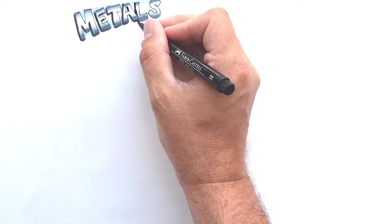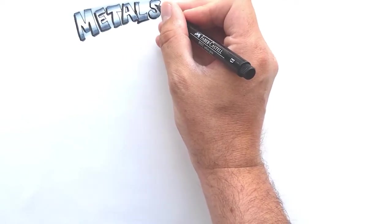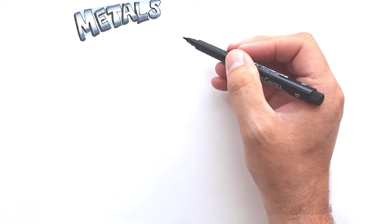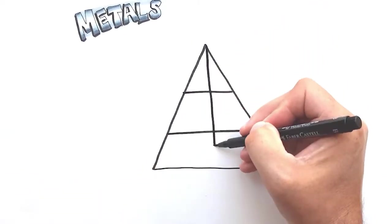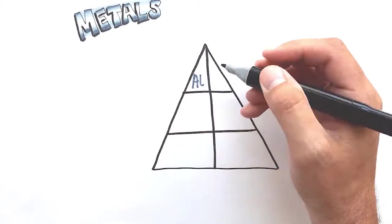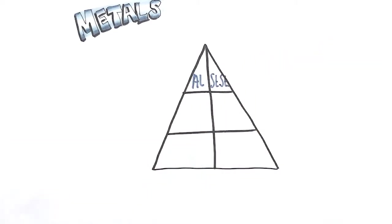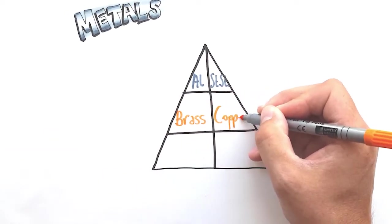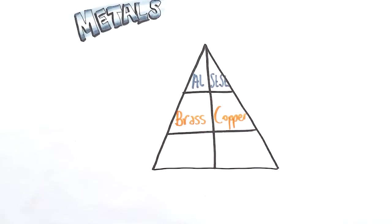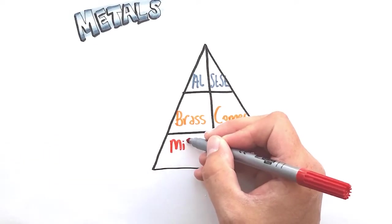Once again instead of just telling you this we like to present this visually as well. So similar to the plastics triangle I've made up a metals triangle. At the top we have aluminium and stainless steel. Next down we have brass and copper and finally at the bottom we have mild steel and iron. More on these shortly.